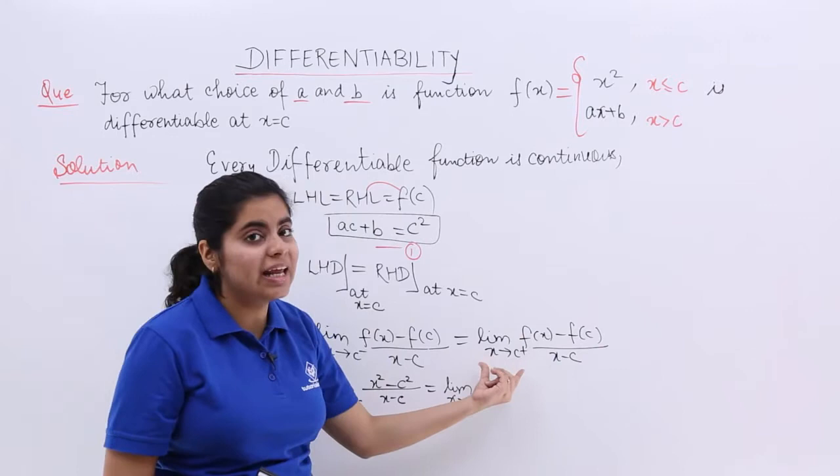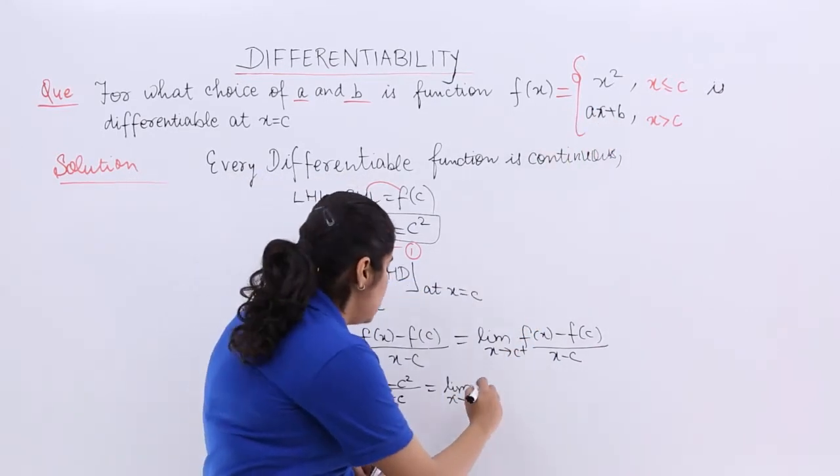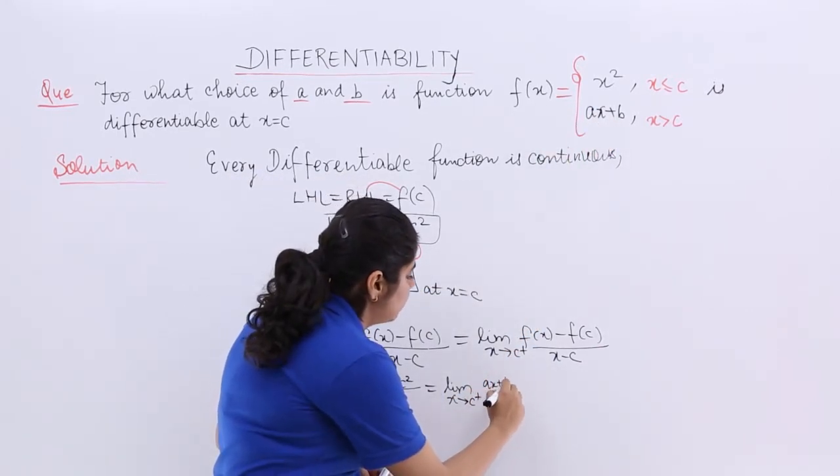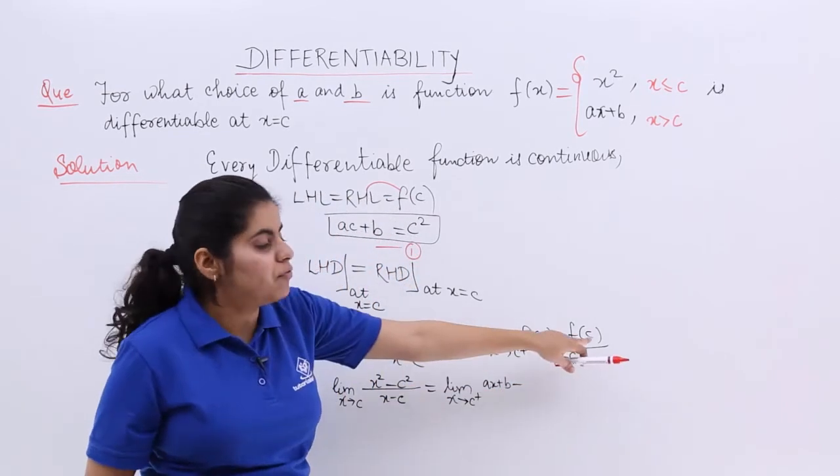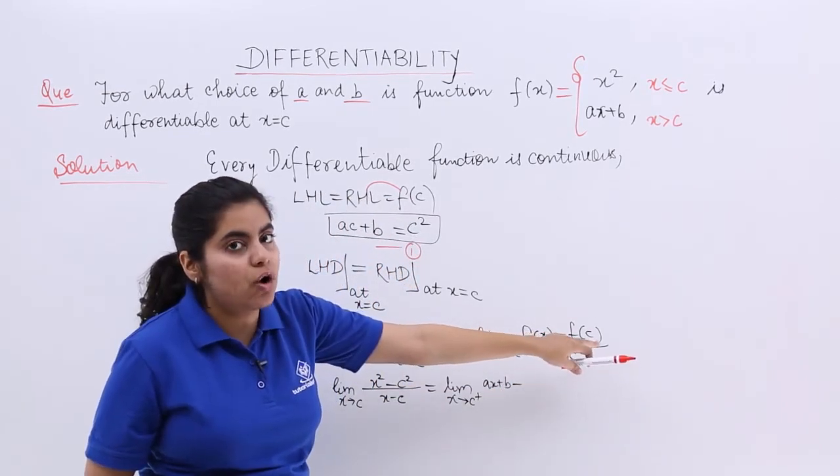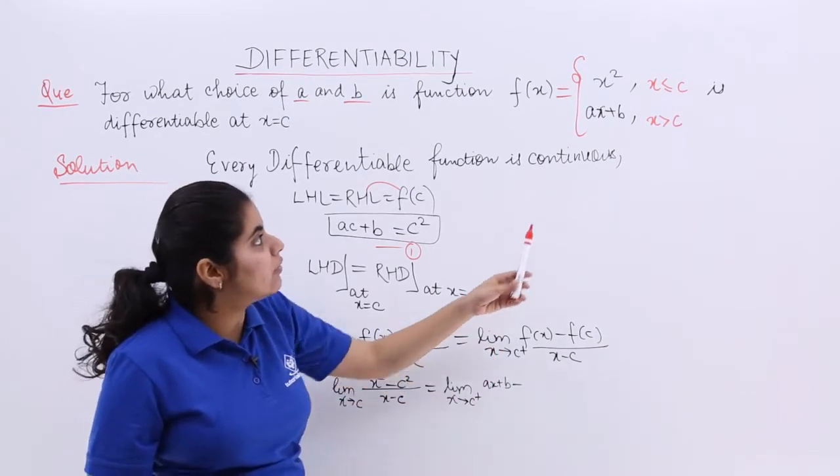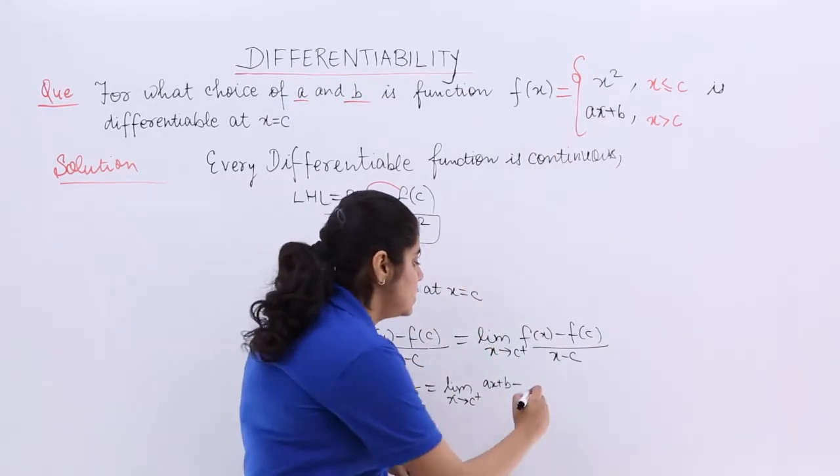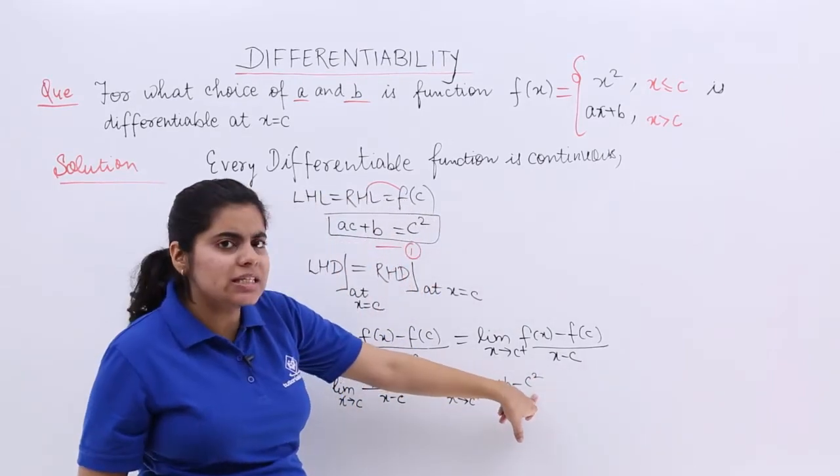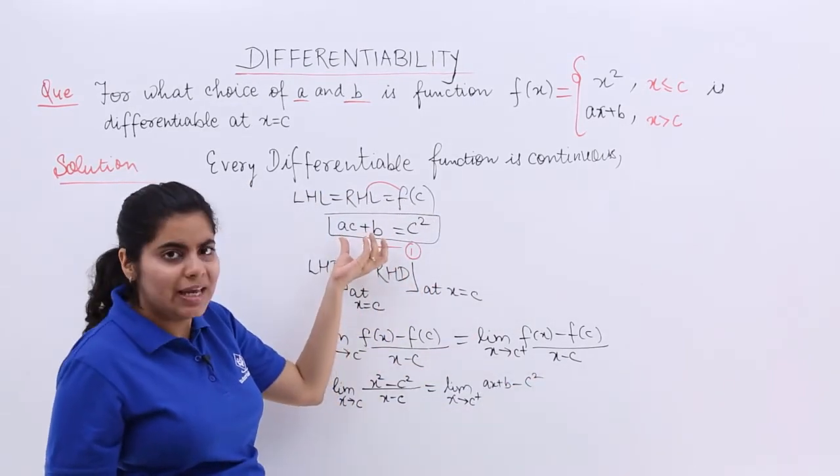f of x means greater than c, Ax plus B minus f of c. f of c means in this expression, you need to basically write c square, c square. But, what else is c square equal to? Isn't it equal to Ac plus B?